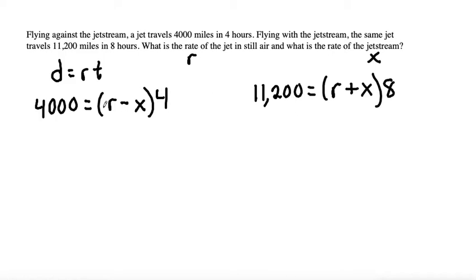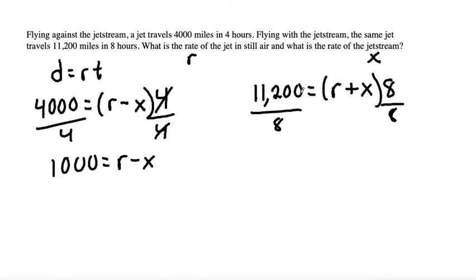From here we want to solve these two equations as a system. So first just to simplify a bit I would divide both sides by 4 on this equation. 4,000 divided by 4 is 1,000 and this 4 divided by 4 cancels out, it leaves us just with r minus x. And let's do a similar idea over here, let's divide both sides by 8 and 11,200 divided by 8 is 1,400. So 1,400 is equal to r plus x.